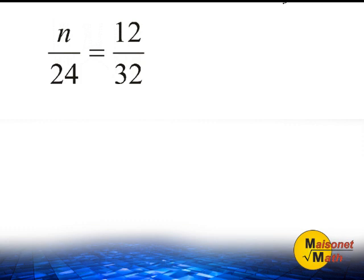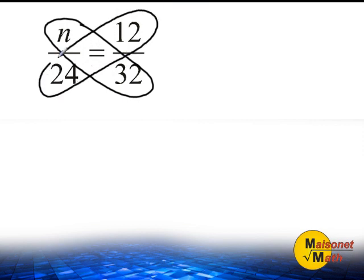For example, 32 times n should be the same thing as 24 times 12. So let's set up an algebraic equation expressing this fact. In fact, 32 times n should be the same thing or equal to 12 times 24.